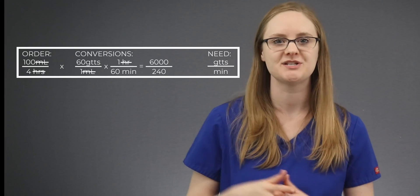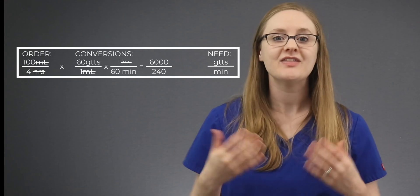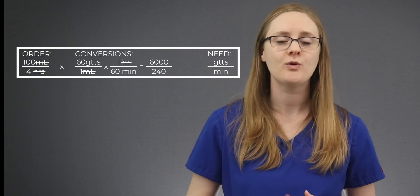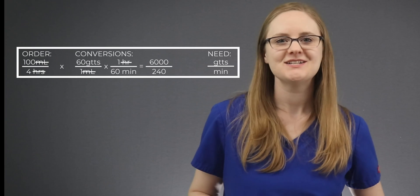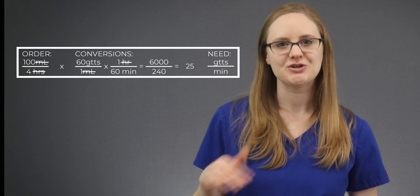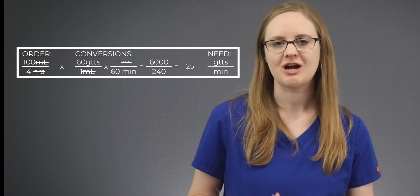Step number 4 is to solve the problem, and this is super easy using dimensional analysis. All you need to do is multiply across the top, multiply across the bottom, and divide those two numbers. So we multiply 100 times 60 times 1, which gives us 6,000, and then multiply the bottom numbers — 4 times 1 times 60 — which gives us 240. Now we divide 6,000 by 240, which gives us 25. So the answer is 25 drops per minute, but we can't forget the next steps.